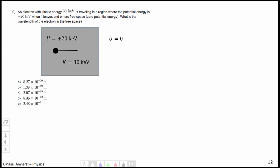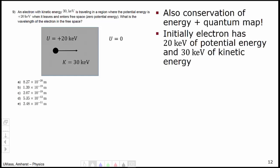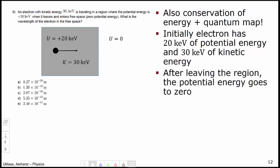Question number 9 was actually somewhat similar to question number 8. Initially, the electron had 20 keV of potential energy and 30 keV of kinetic energy, and then after leaving the region of interest, the potential energy goes to zero. So in terms of conservation of energy, we have ui plus ki equals kf, which means the final kinetic energy of the electron was 50 keV, the 20 plus the 30.